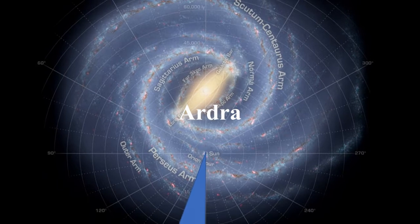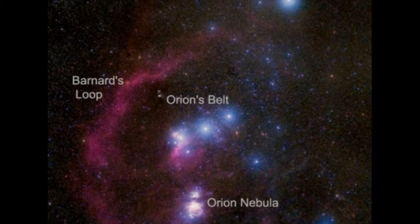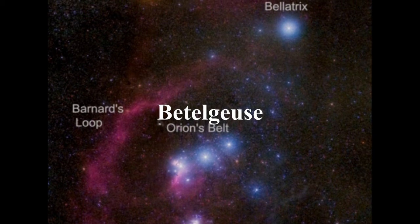This region of the sky is called Ardra in Indian astronomy. In this region is one of the largest stars visible to the naked eye, namely Betelgeuse.